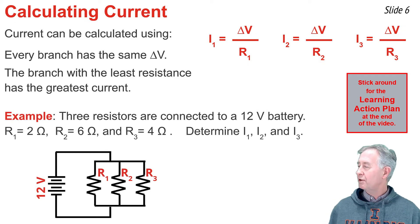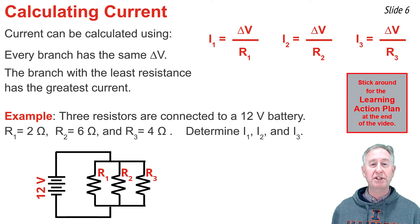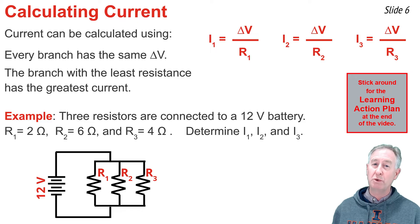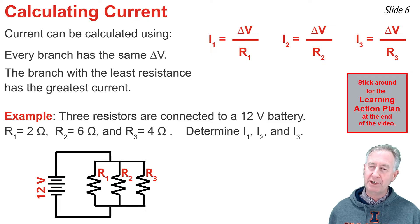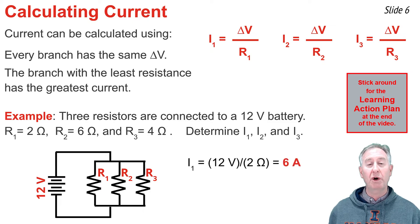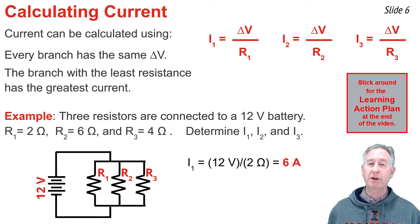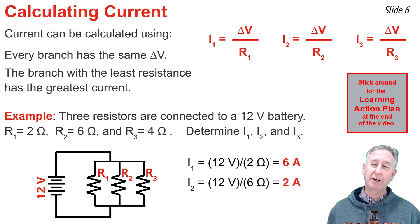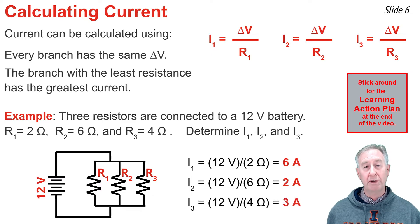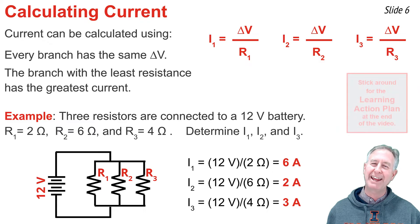Let's try an example: a 12-volt battery with three resistors in parallel — 2 ohms, 6 ohms, and 4 ohms. In the first branch: I₁ = 12 V / 2 Ω = 6 amps. In the middle branch: I₂ = 12 V / 6 Ω = 2 amps. In branch three: I₃ = 12 V / 4 Ω = 3 amps.